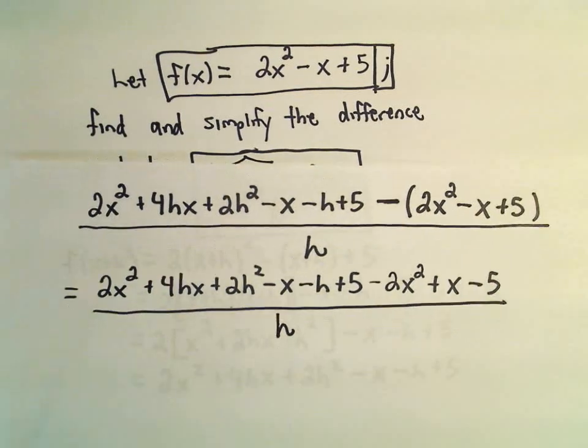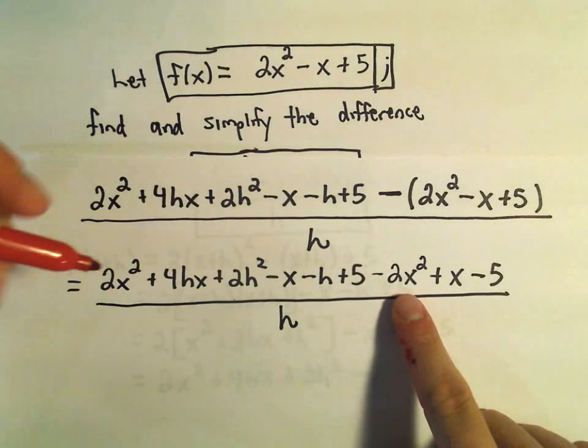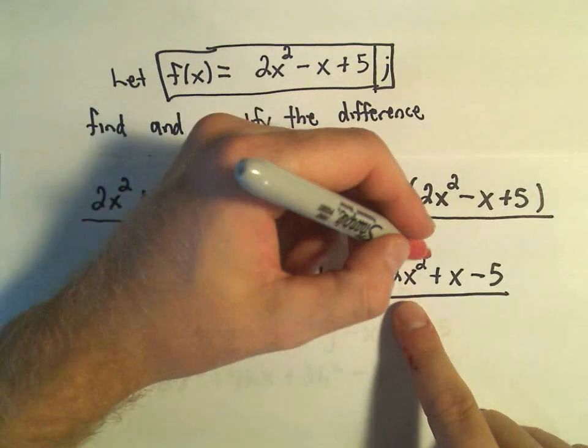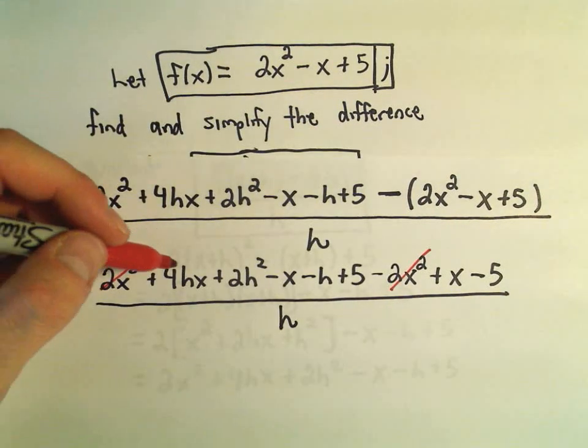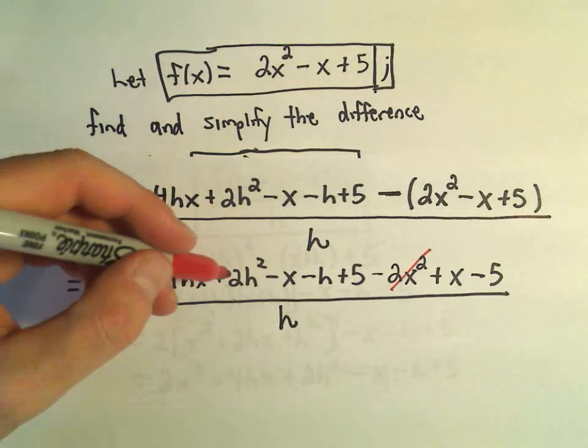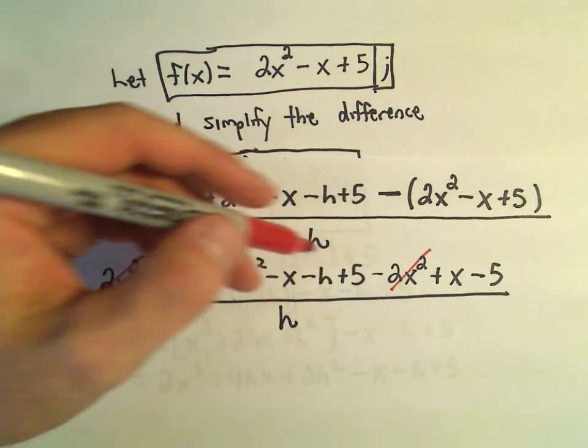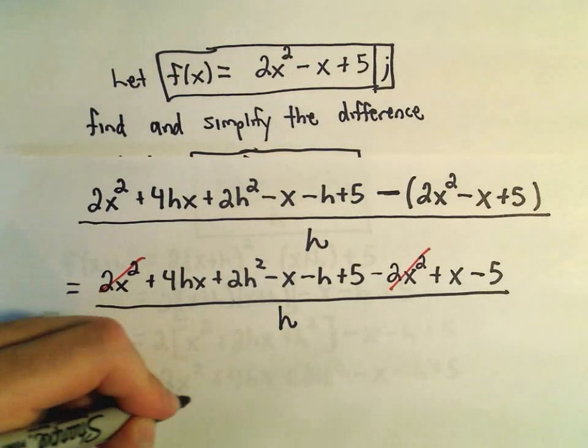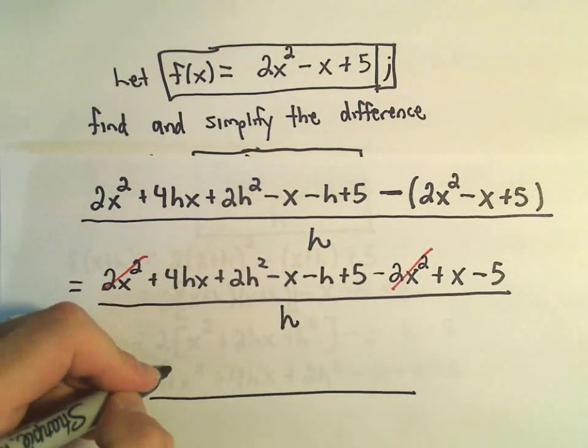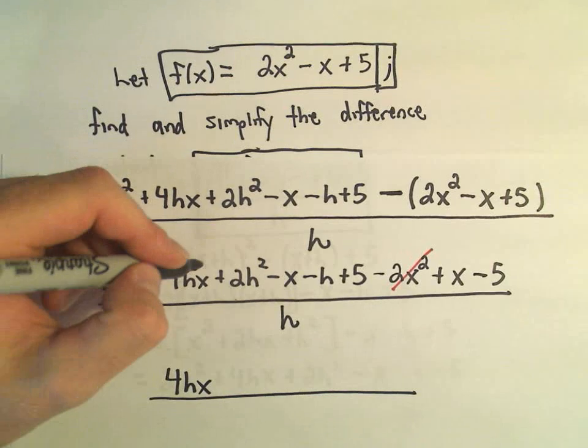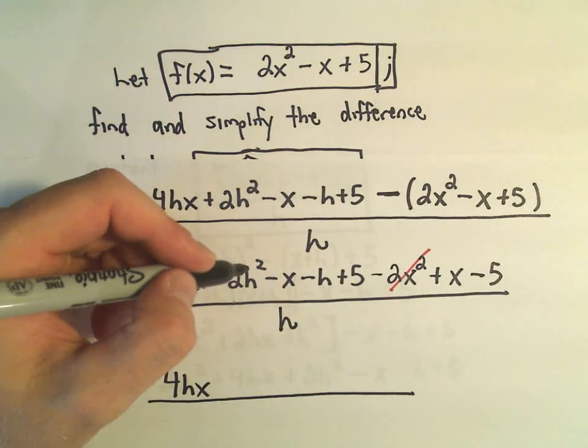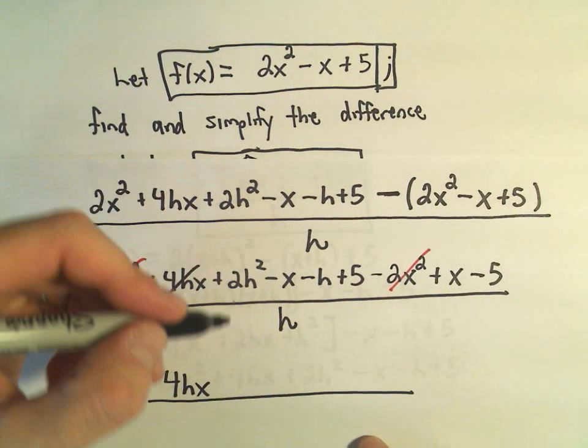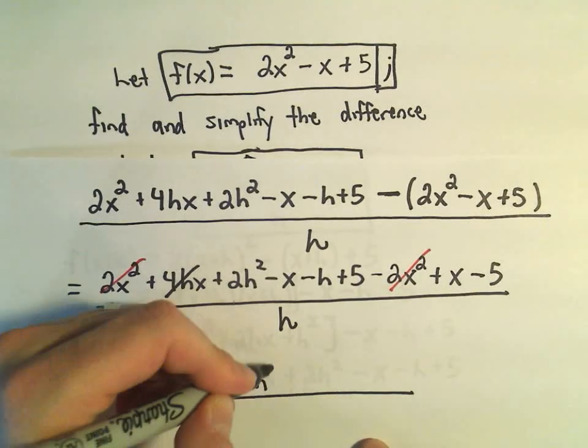So it looks to me like we've got a 2x squared and a negative 2x squared. So those are going to cancel. Let's see, we've got a 4hx. I don't see any other hx's in there. So nothing's going to happen to that term. So I'm just going to go ahead and write that one down. 4hx. So now that's gone. We've got 2h squared. I don't see any other h squared terms. So I'm going to write that one down.